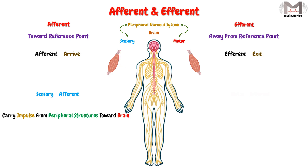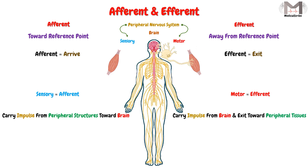While the motor neuron is considered efferent, because it carries the impulse from the brain and exits toward the peripheral tissues — so the flow direction is away from the reference point.